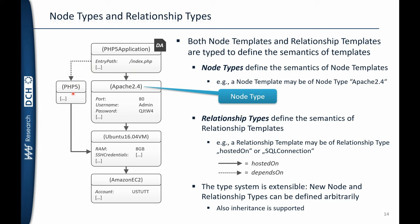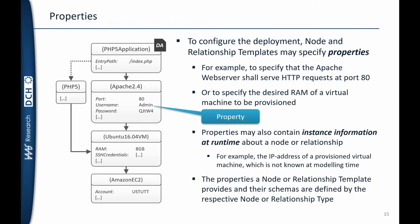Additionally, TOSCA allows inheritance between node types and relationship types. For example, I can define an abstract web server which already defines generic properties such as the port, and then define the Apache 2.4 web server as a subtype of the abstract web server, inheriting its semantics including the properties. The node templates define properties and values. The properties themselves are defined by the node types — for example, the PHP 5 application node type defines that instances, the node templates, have to have an entry path.